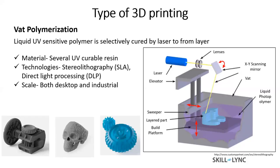The last question: can a 3D printed material replace a metal part? Yes, 3D printed material can definitely replace a metal part. There are a lot of case studies available on Google where 3D printed parts have replaced metal parts. There is a recent study in which GE made a 3D printed nozzle used in a jet engine, replacing their previous metal part.